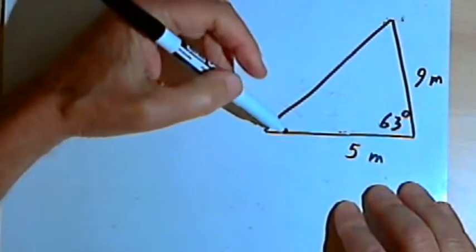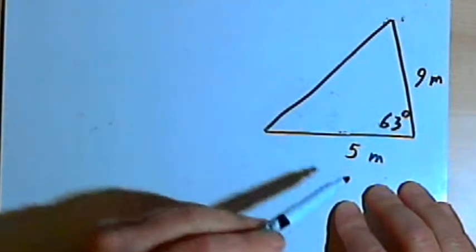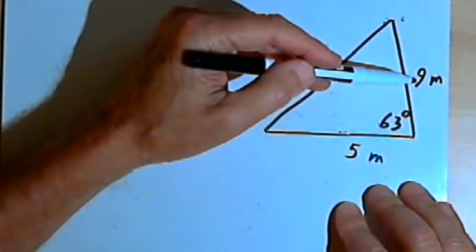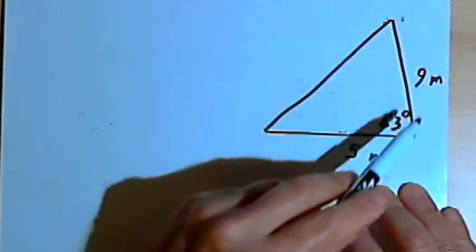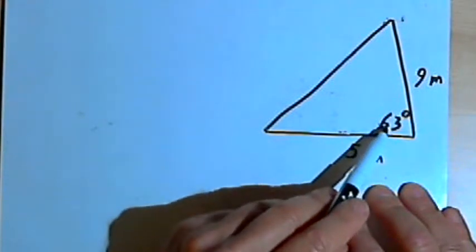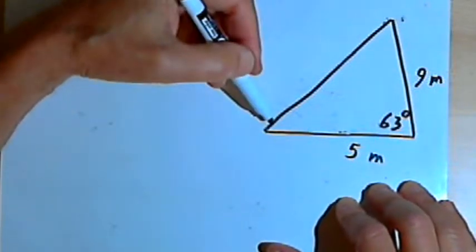I've got a triangle and I know the length of two of the sides. One side is 5 meters long, the other side is 9 meters long. And I know the size of the angle in between those two sides. We call this the included angle, and that's 63 degrees. I want to find the remaining side.